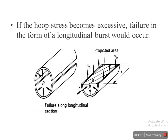When the hoop stress value exceeds the permissible value, failure will develop along the longitudinal direction — cracks form along the longitudinal axis of the cylinder. Similarly, when the longitudinal stress exceeds the permissible value, failure develops along the circumferential direction.